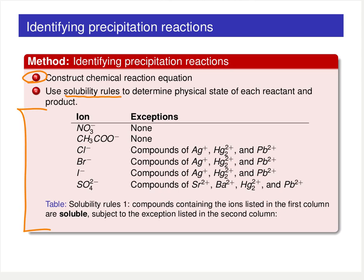Here's our first table of solubility rules. In the first column we have a list of soluble ions. The way you read this is: nitrate, chloride, sulfate — these ions are soluble unless they are paired up with one of the exceptions listed in the second column. For the first two entries there are no exceptions. For example, if you see NO3⁻, you will have a soluble compound.